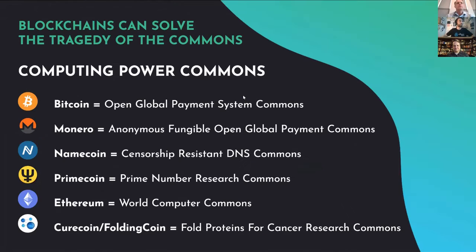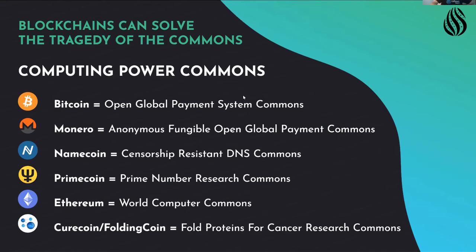You probably know what the Commons is — it's everything about shared resources that we have: the air, the rivers, the seas. Nobody really cares about this, so how can there be value in this? Well, we know there is value. We've seen this now in blockchain — Bitcoin, Ethereum and so on — all of these are actually Commons. These are shared resources. They just exist and they are sustainable.